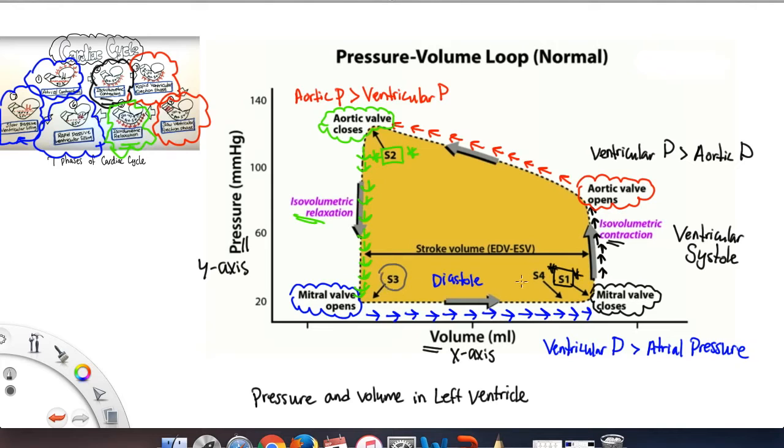Now you can see that the S3 and S4, which are abnormal heart sounds, they are heard during diastole, when the ventricle is relaxed.